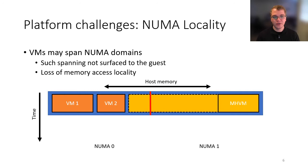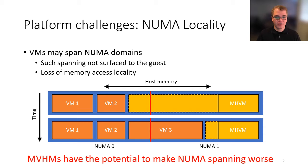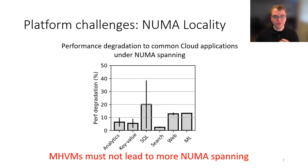The second platform challenge is NUMA locality. VMs can have their memory span different NUMA domains depending on how the allocator assigns them, but this spanning is generally not surfaced inside the guest, leading to a loss of memory access locality. Our MHVMs may exacerbate this: if the MHVM is harvesting a lot of memory spanning the host and then returns that memory for a new guest, that guest ends up spanning as well without being aware of it.